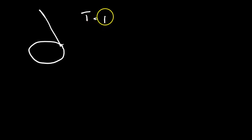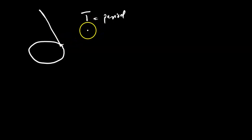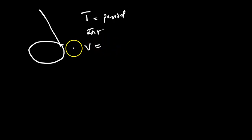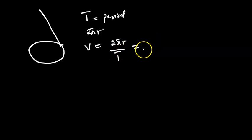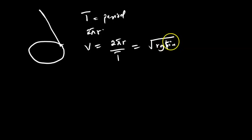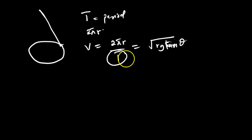For the period of motion, with the pendulum moving in a circular path, the time taken to complete one full circle is called the period T. One complete circle covers a distance of 2πr, so velocity equals distance over time: v = 2πr / T. This same velocity also equals √(rg tanθ), so we can set them equal and make the period the subject of the formula.